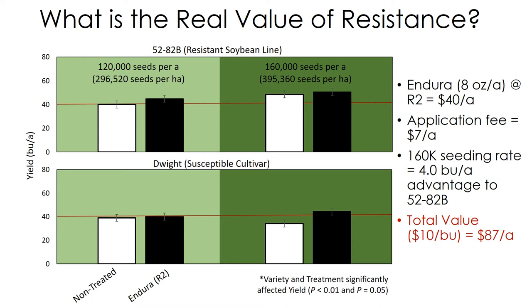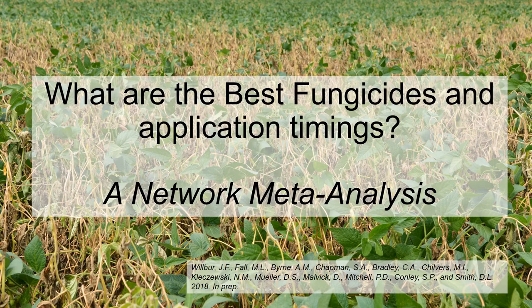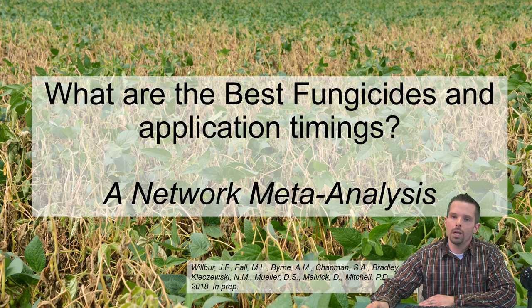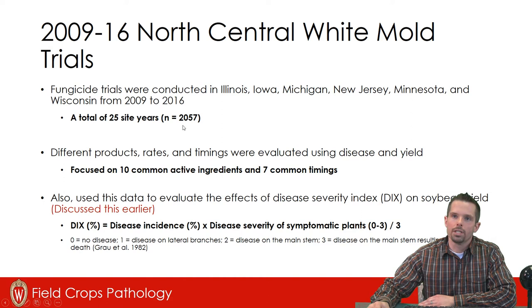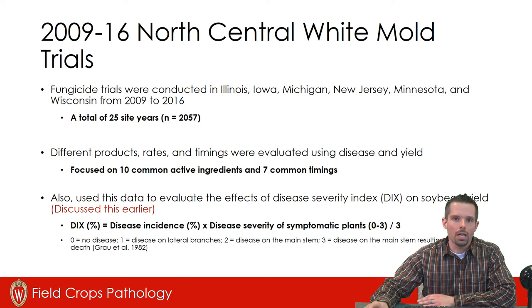However, be aware this type of physiological resistance is not yet commercially available. Continue choosing varieties that respond well across locations, but understand you'll probably need to do some other things in the field as well. That brings us to fungicide applications, including product and application timing. We've done significant work with colleagues across the north central U.S. performing a network meta-analysis — over 2,000 data points across more than 25 site years — examining 10 common active ingredients and 7 common timings.